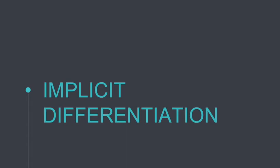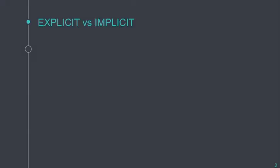So what is implicit differentiation? If we have implicit, there's also what we call explicit. The difference is that explicit differentiation is just what we do normally — the usual differentiation. So if the function is written in the form y = f(x), we differentiate that — that's what we call explicit differentiation.